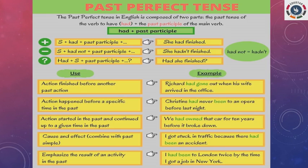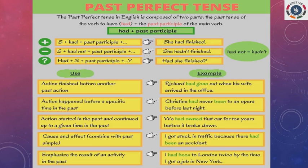For example: 'Richard had gone out when his wife arrived in the office.' Here, 'when his wife arrived in the office' is the past action, and 'Richard had gone out' is the past perfect action — it happened before. For a specific time in the past, past perfect is used. For example, 'We had owned that car for 10 years before it broke down.' And for cause and effect: 'I got stuck in traffic because there had been an accident.' To explain the cause, past perfect tense is used.